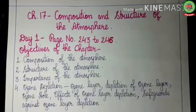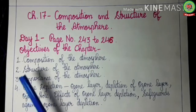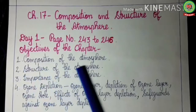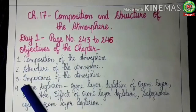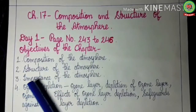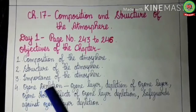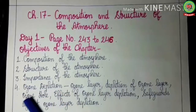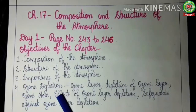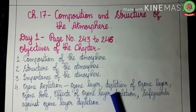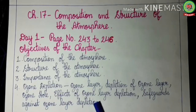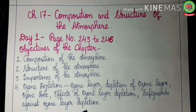First of all, let us see the objectives of the chapter. Number 1: composition of atmosphere. Number 2: structure of the atmosphere. Number 3: importance of the atmosphere. Number 4: ozone depletion, ozone layer depletion, ozone hole, effects of ozone layer depletion, and safeguards against ozone layer depletion.